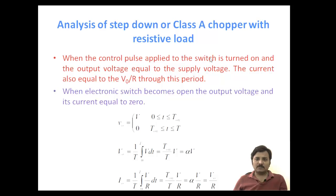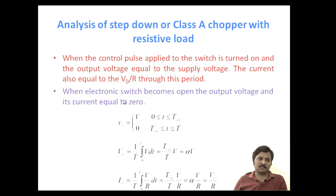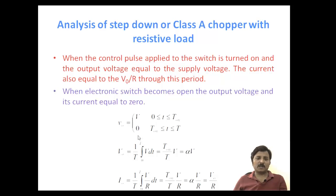When the control pulse turns the switch on, the output voltage equals the supply voltage. For a resistive load, the current through the load equals V_o divided by R. When the switch is open, the output voltage and current are both zero. The V_RMS value equals the square root of the duty ratio times V, and the I_RMS equals the square root of alpha times V divided by R.